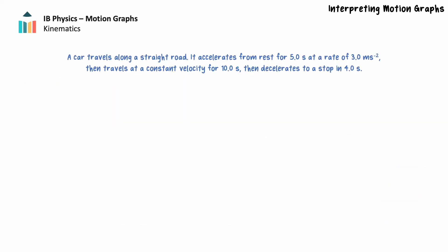Let's apply our understanding of motion graphs to the type of question you are likely to encounter during your learning and revision. A car travels along a straight road: it accelerates from rest for 5.0 seconds at a rate of 3.0 meters per second squared, then travels at a constant velocity for 10.0 seconds, then decelerates to a stop in 4.0 seconds. We are going to draw a velocity-time graph and a position-time graph for this motion.